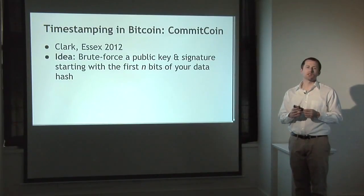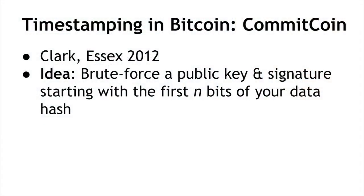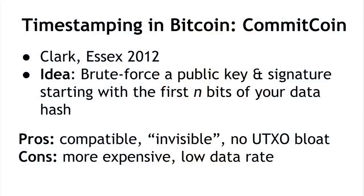A more sophisticated way is called CommitCoin. This is a protocol for finding public keys and signatures that have the data you want to commit to embedded in the bits of the public key and signature. You do some brute-force work to find a special public key by trying many keys and signatures so the bits representing the hash of your data are also bits of a valid public key. The advantage is it's still compatible and invisible to miners — it looks just like any other valid public key — and you aren't adding unspendable transaction outputs. The downside is it's more expensive, requiring brute-forcing, and your data rate is lower.